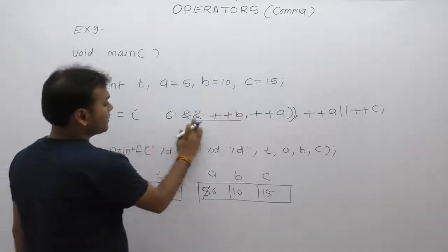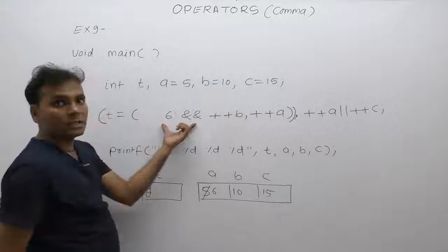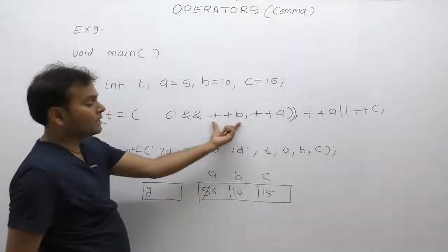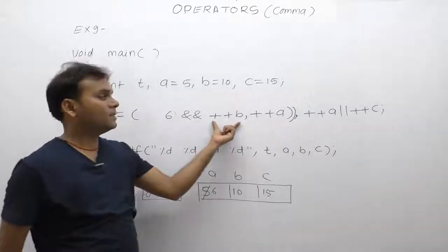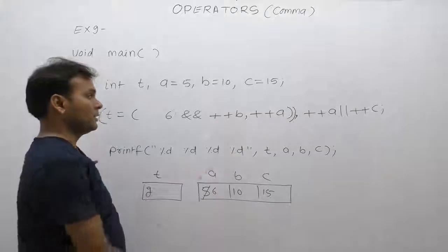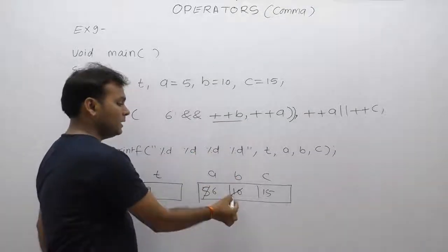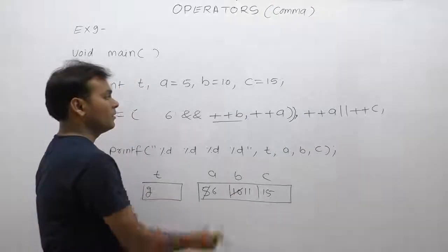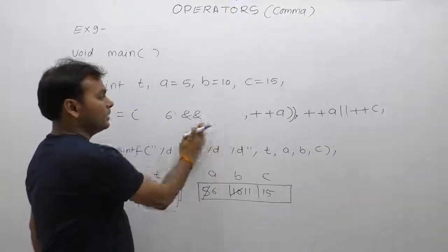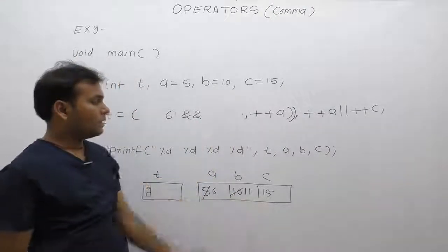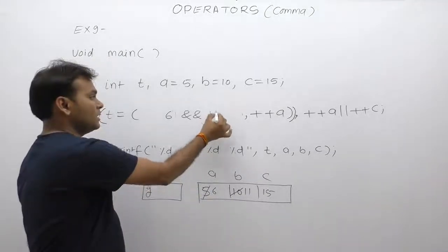Then, in brackets respect, first condition too. First condition too, then check the second condition. Second condition, plus B, again pre-increment. Pre-A, then increment, then replacement. Replace the incremented value of B, which is 11.